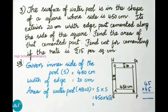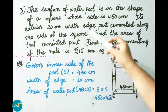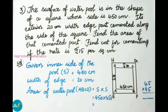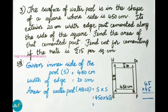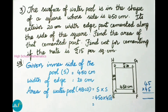Question number three: the surface of a water pool is in the shape of a square whose side is 450 centimeter. Its exterior 20 centimeter width edge part is cemented along the side of the square. Find the area of that cemented part and find the cost for cementing at the rate of 15 rupees per square centimeter. Given: inner side of the pool is 450 centimeter and width of edge is 20 centimeter.